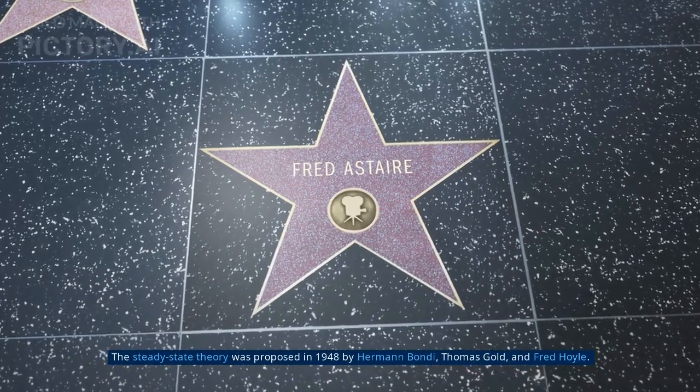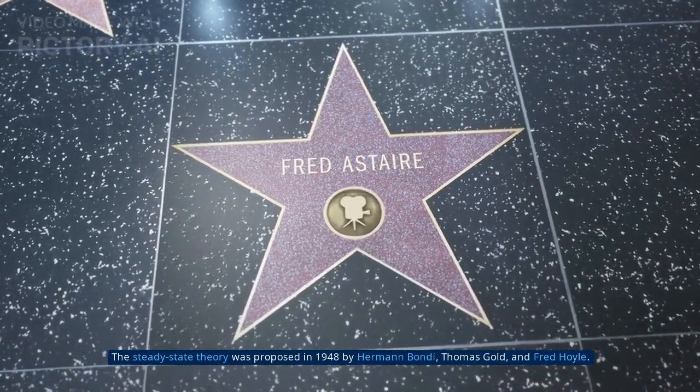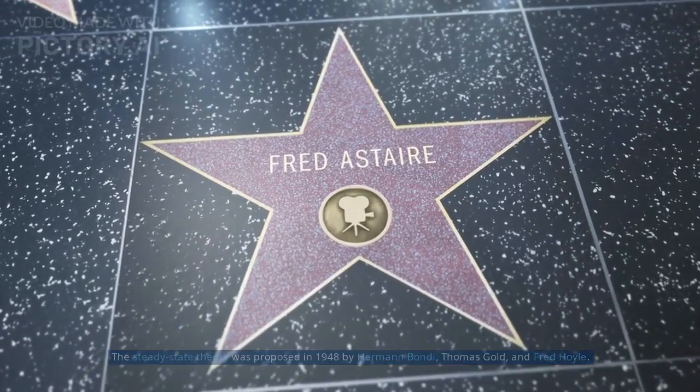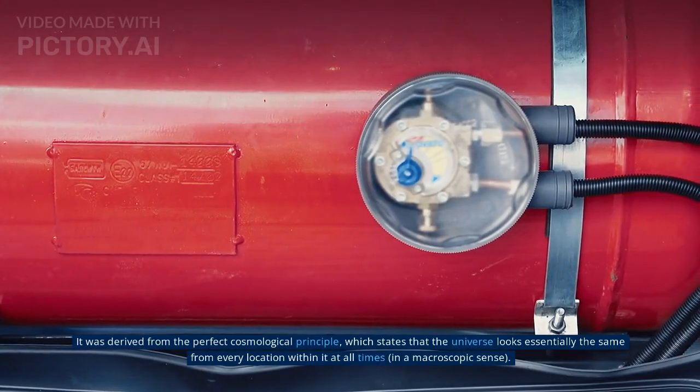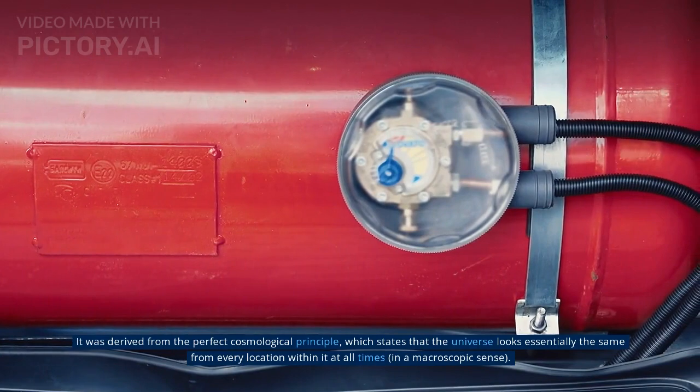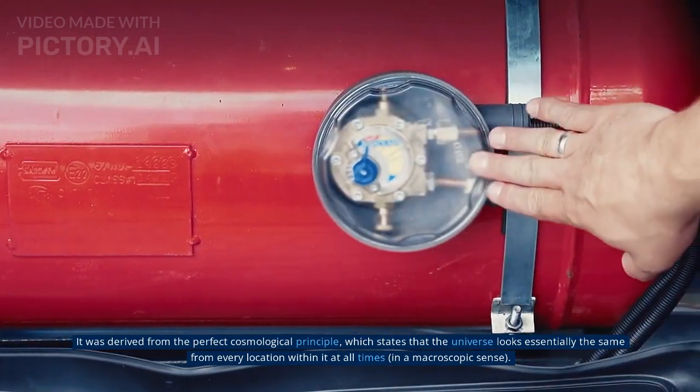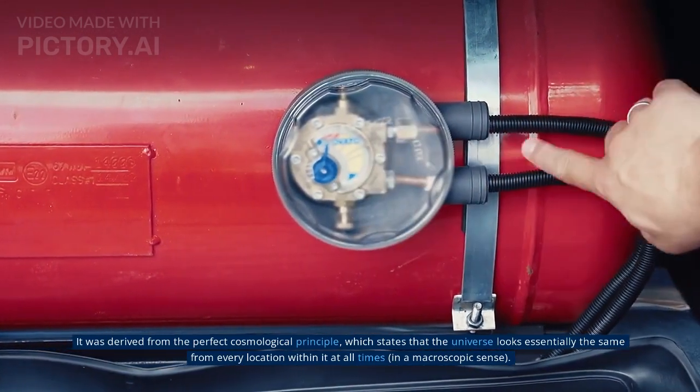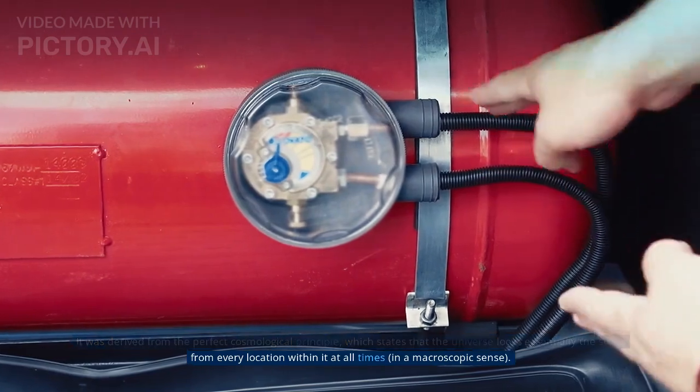The Steady State Theory was proposed in 1948 by Herman Bondi, Thomas Gold, and Fred Hoyle. It was derived from the perfect cosmological principle, which states that the universe looks essentially the same from every location within it at all times, in a macroscopic sense.